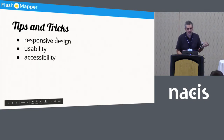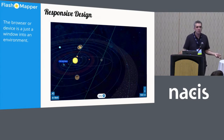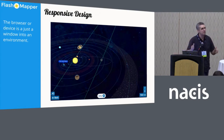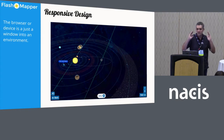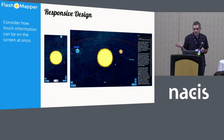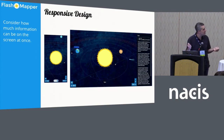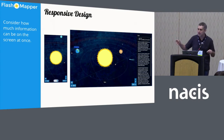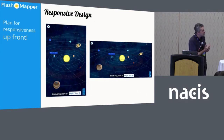Tips and tricks: responsive design, usability, and accessibility. When I was in e-learning, my instructional designers would always say content can't be responsive — it's too complicated. The way I kept telling them to think about it: just imagine your device or browser is a window into an environment and think about what properties you need to shift to make those window sizes work. Think about how much content can be on screen at one time. And the best tip is plan for it up front — if you try and shove it in at the end, it just doesn't work very well.